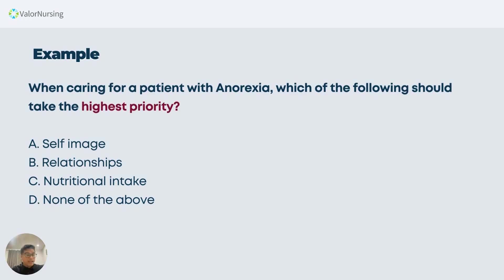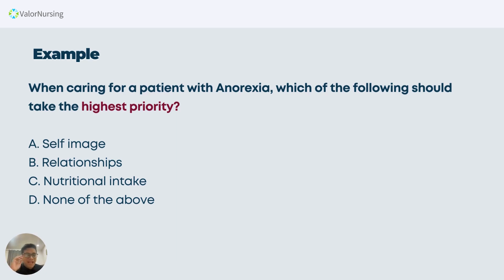The question says: when caring for a patient with anorexia — a type of eating disorder in psychiatric nursing — which of the following should take the highest priority? The options are: A) self-image, B) relationships, C) nutritional intake, D) none of the above. Again, repeat-read every PNLE question at least two to three times. If we use Maslow's Hierarchy of Needs, we know the lowest level is physiological needs, so let's eliminate options one by one.